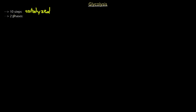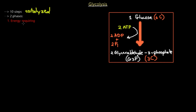The 10 steps are divided into two phases. The first phase is called the energy-requiring phase, because energy is needed for it to proceed. One glucose molecule with six carbons undergoes five reactions, and overall you produce two molecules of glyceraldehyde-3-phosphate (G3P), each with three carbons. To do this, two ATP molecules must be hydrolyzed — the phosphate groups are added onto the molecules to produce G3P.